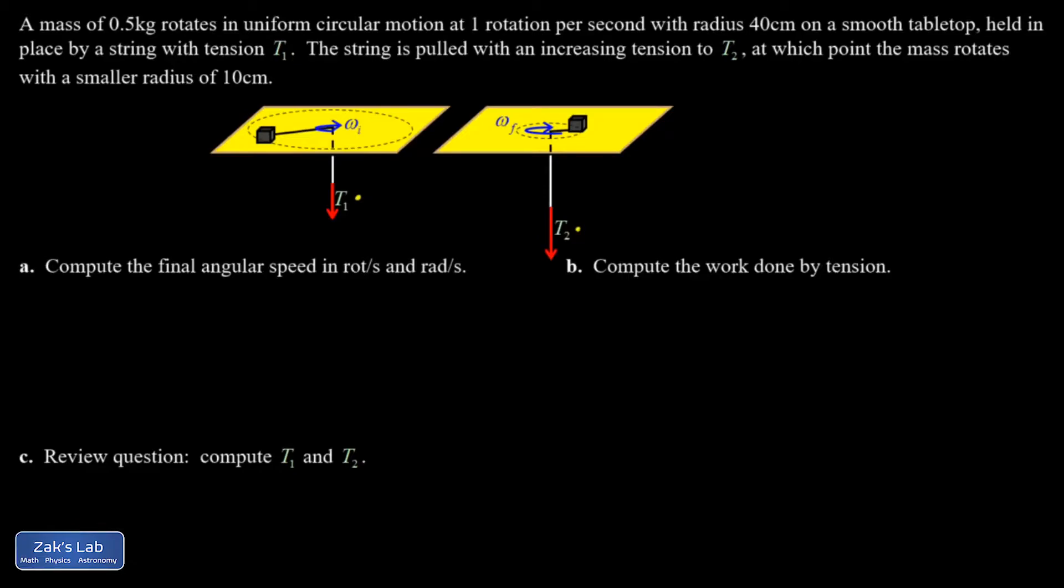And we actually compute those in Part C. That's really a review question of some older dynamics ideas. The main part of this problem is really conservation of angular momentum, and the reason why angular momentum is conserved is that that string force is only pulling radially on this mass, which means it cannot exert any torque. So there it is in both cases. It's pulling exactly radially, and a force that pulls radially has no perpendicular component to exert torque. With no net torque being exerted, it means the angular momentum is conserved.